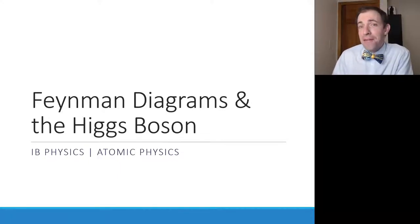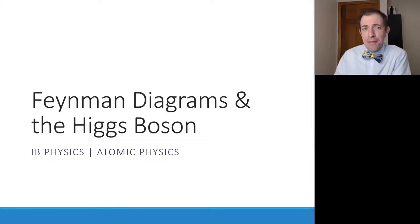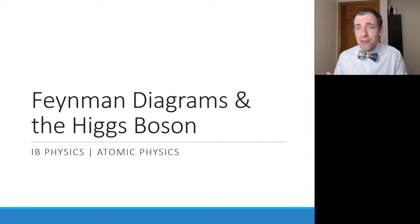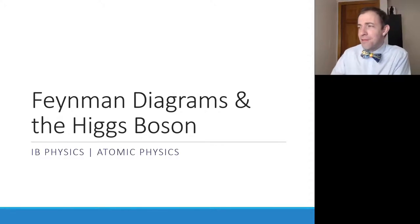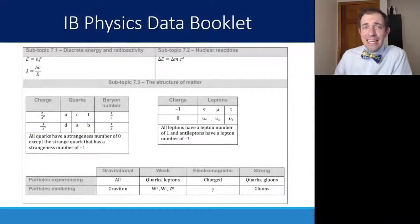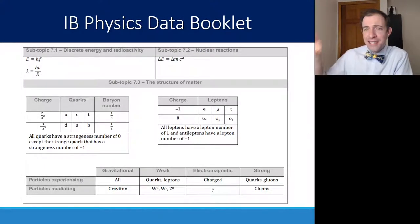In this video, we're going to finish off our atomic physics topic with a discussion of Feynman diagrams, how they're related to particle physics, and a particle known as the Higgs boson, how it was discovered and what it means for our understanding of the standard model. To start us off, here is the data booklet for IB physics, topic 7.